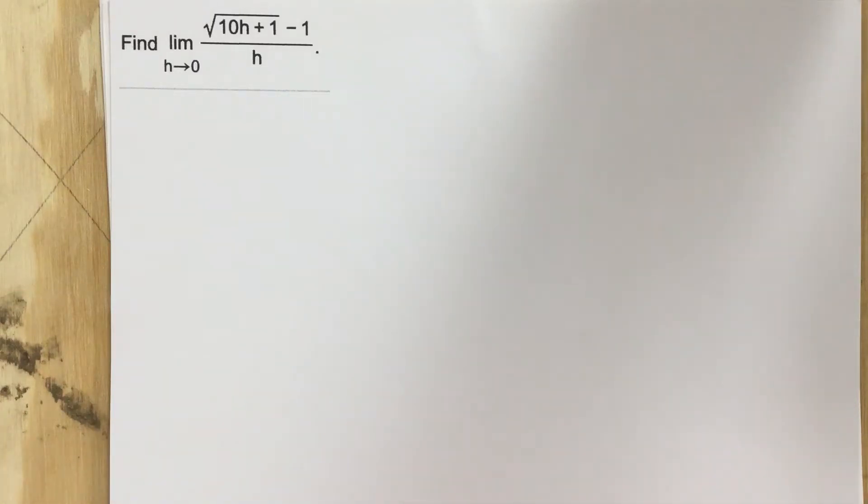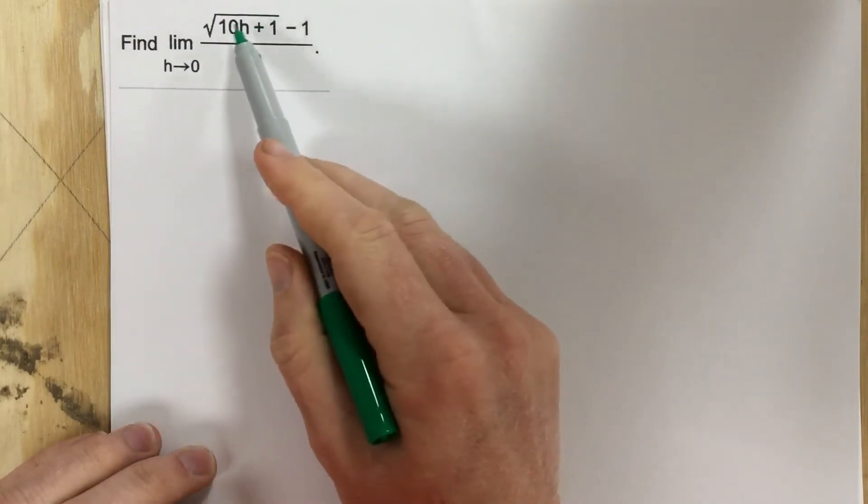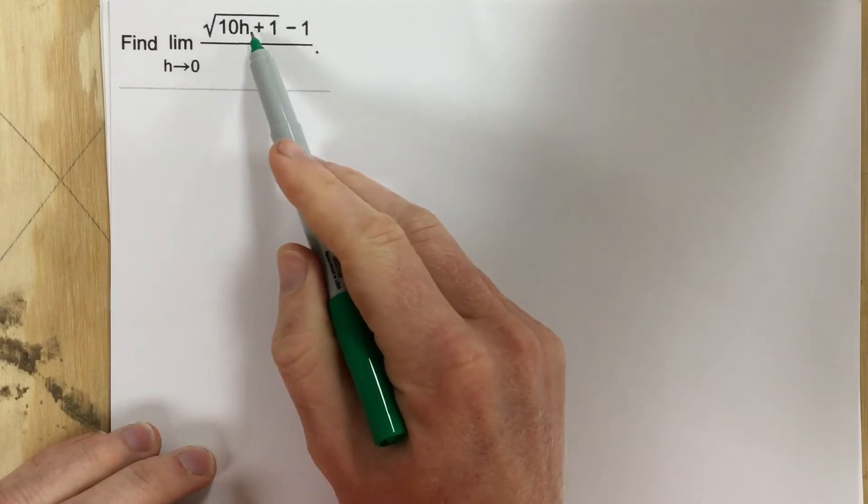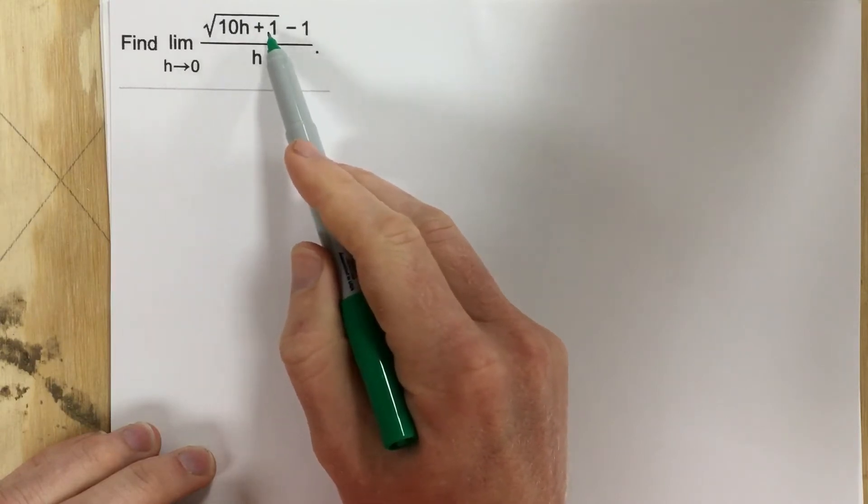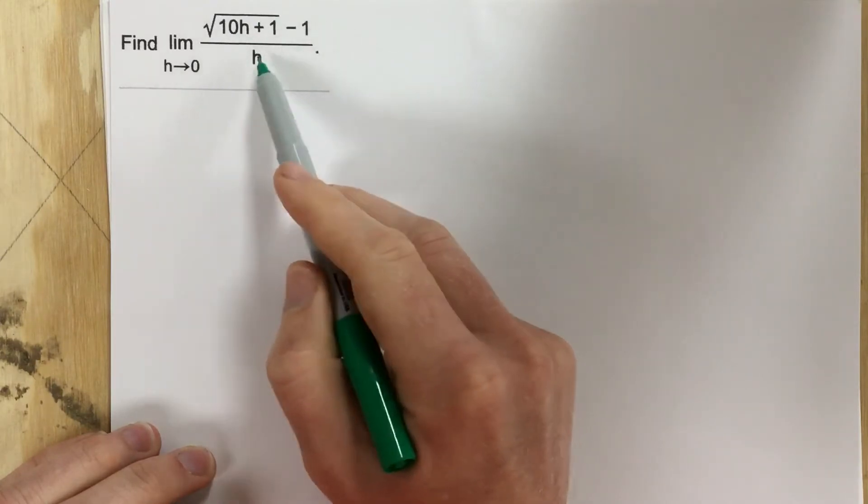This is problem number four for section 2.2. In this problem, they ask us to find the limit of the function root 10h plus 1 minus 1 over h.